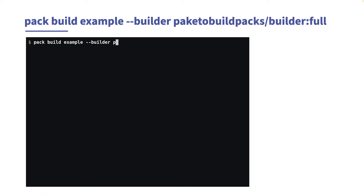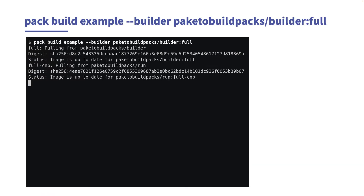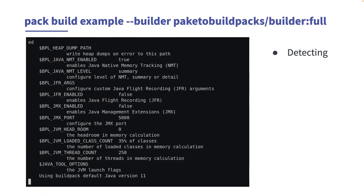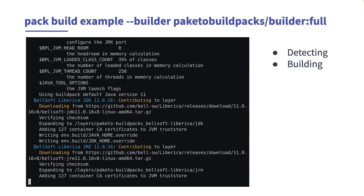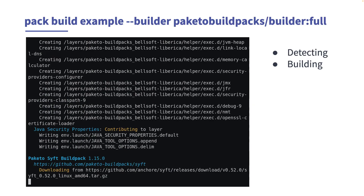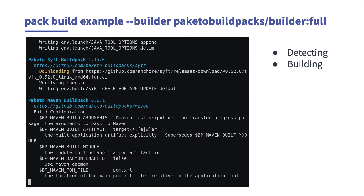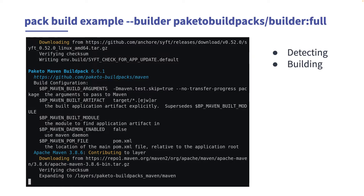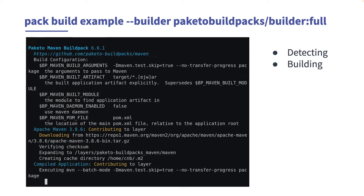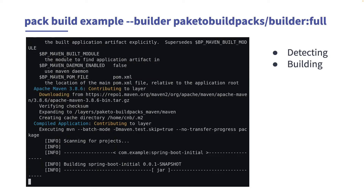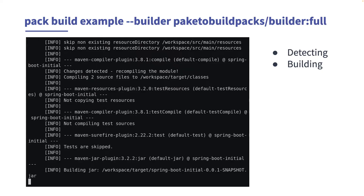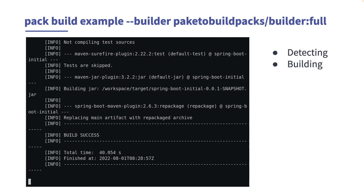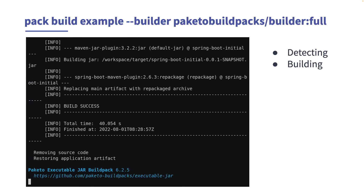Using the Buildpacks pack tool, we can build an image that we name example. That's all there is to building an application using Buildpacks. You write your application and declare its dependencies, then use pack with a builder to build the production image.